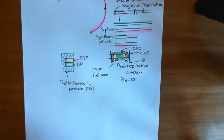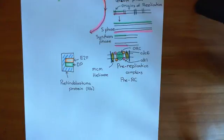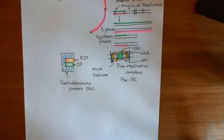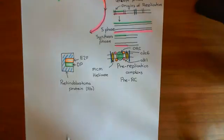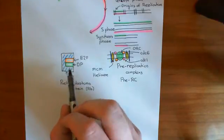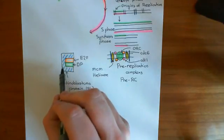Retinoblastoma protein is usually holding on to these E2F transcription factors with their dimerization partner, and that's inhibiting the E2F-DP complex. If it was free, the E2F-DP complex would go to the nucleus and start altering the expression of certain proteins. One of the proteins it causes expression of is cyclin A, which moves you into the S phase of the cell cycle. In order to move into S phase, you need to release E2F and its dimerization partner by inactivating the retinoblastoma protein.